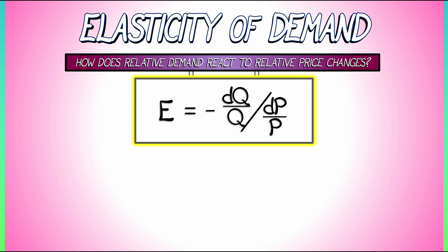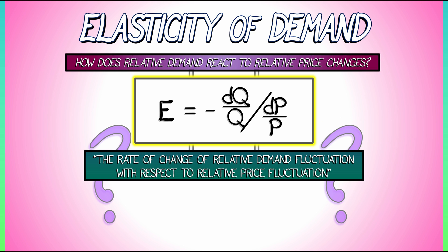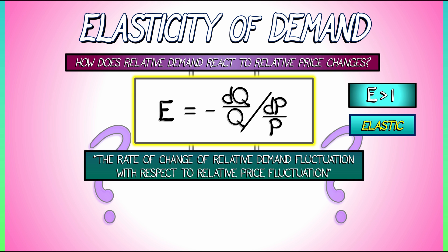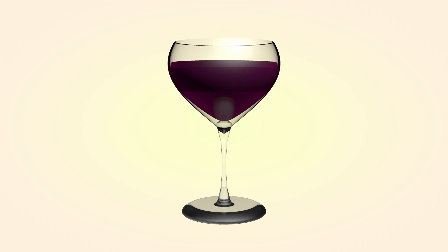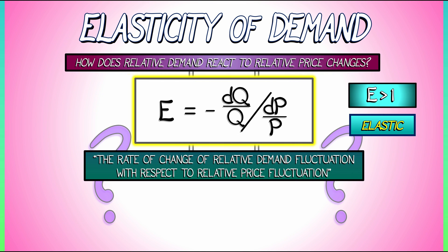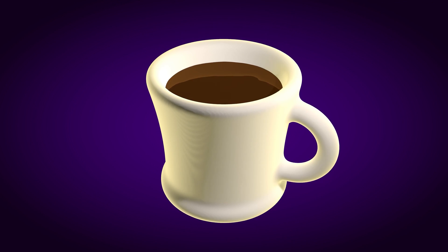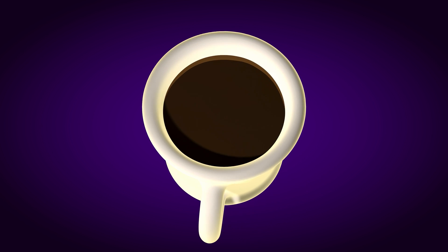What is this? In economics class, you might learn that this is the rate of change of relative demand fluctuation with respect to relative price fluctuation. The way this is usually explained is in terms of examples. If E is bigger than one, you have an elastic product — one that is more sensitive to price changes. Think of something like wine, where if the price goes up a little bit, you don't really need it as much. Compare that with something that has elasticity less than one, that is inelastic — something where if the price goes up, you grip your teeth and just buy it anyway, like coffee, or medicine, or toilet paper.